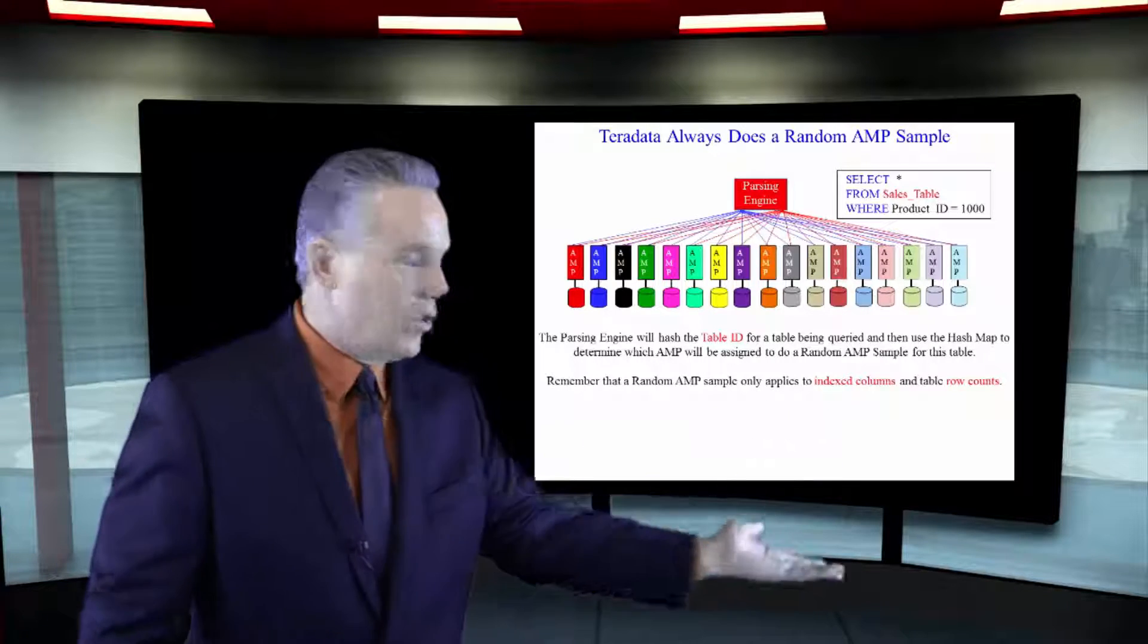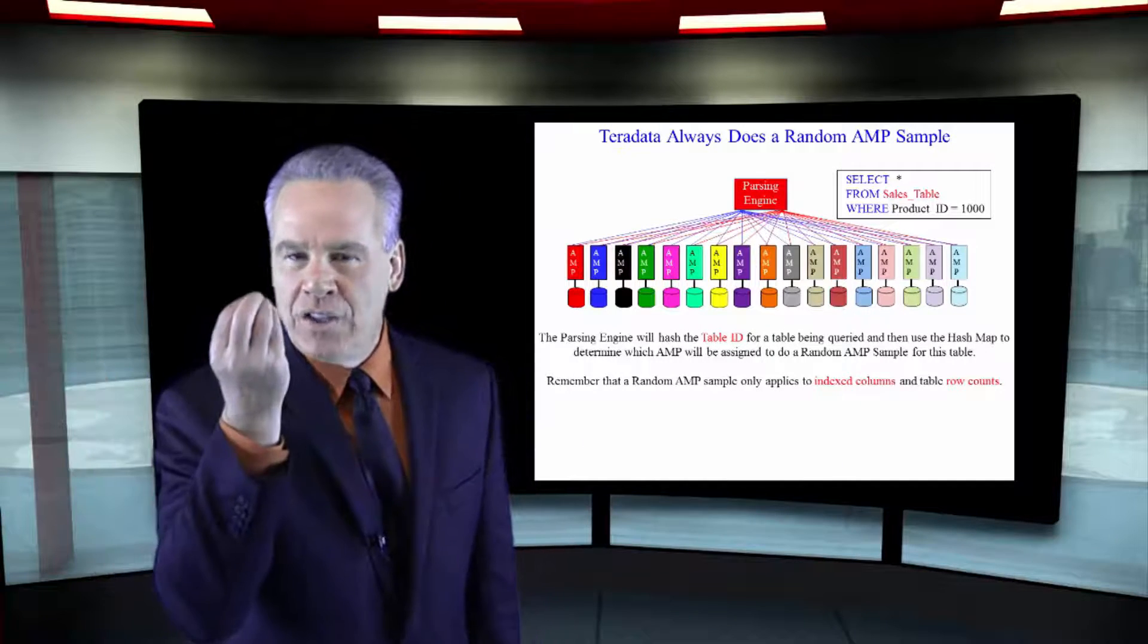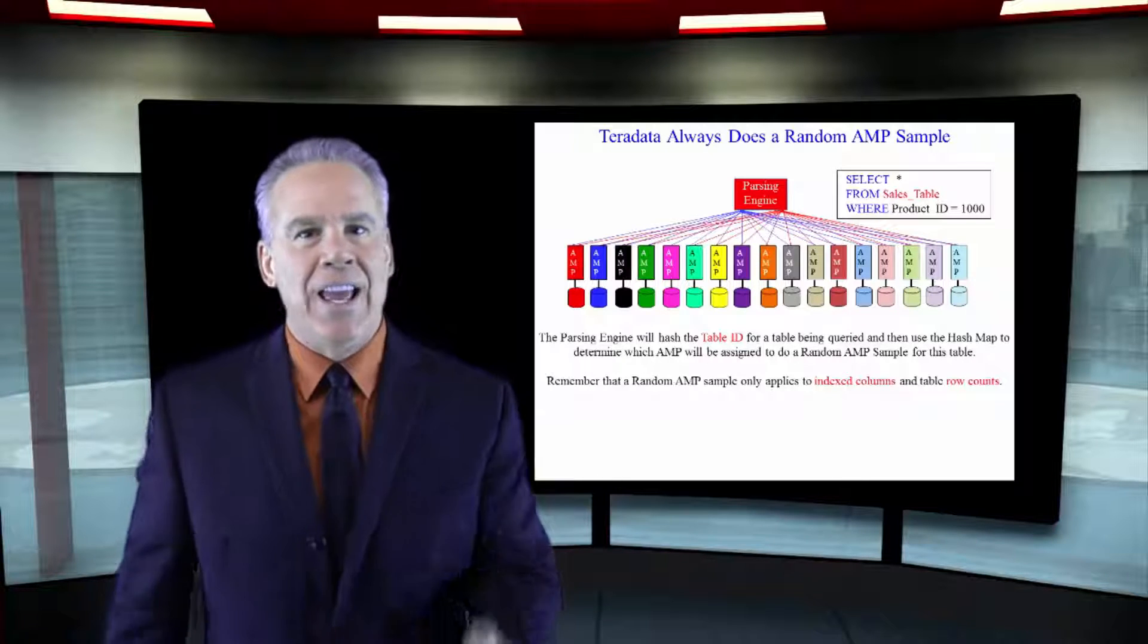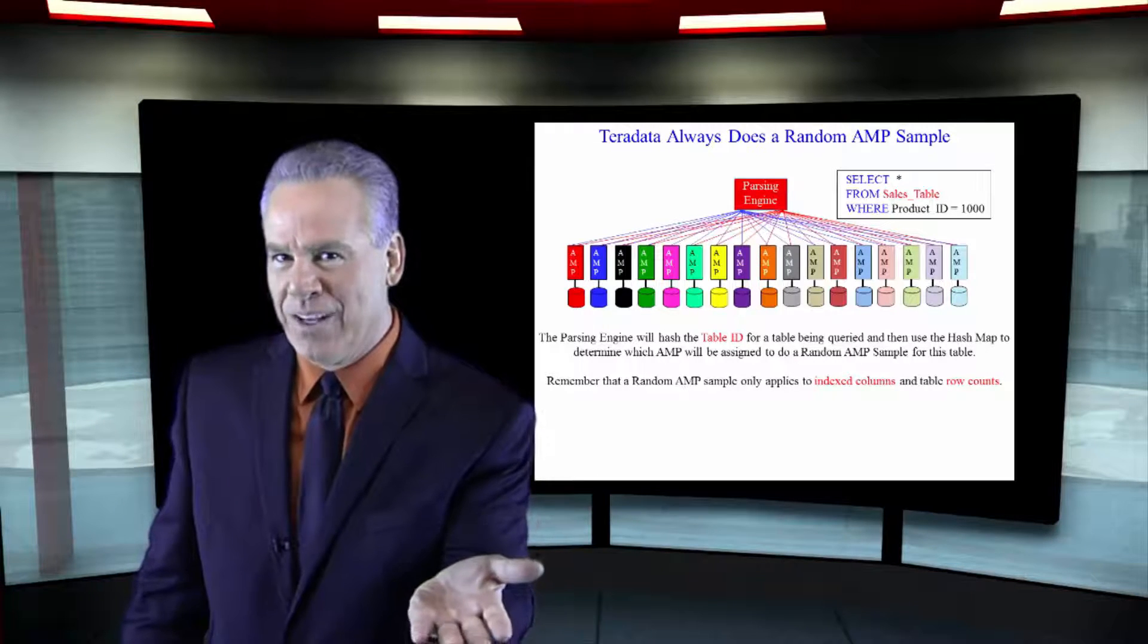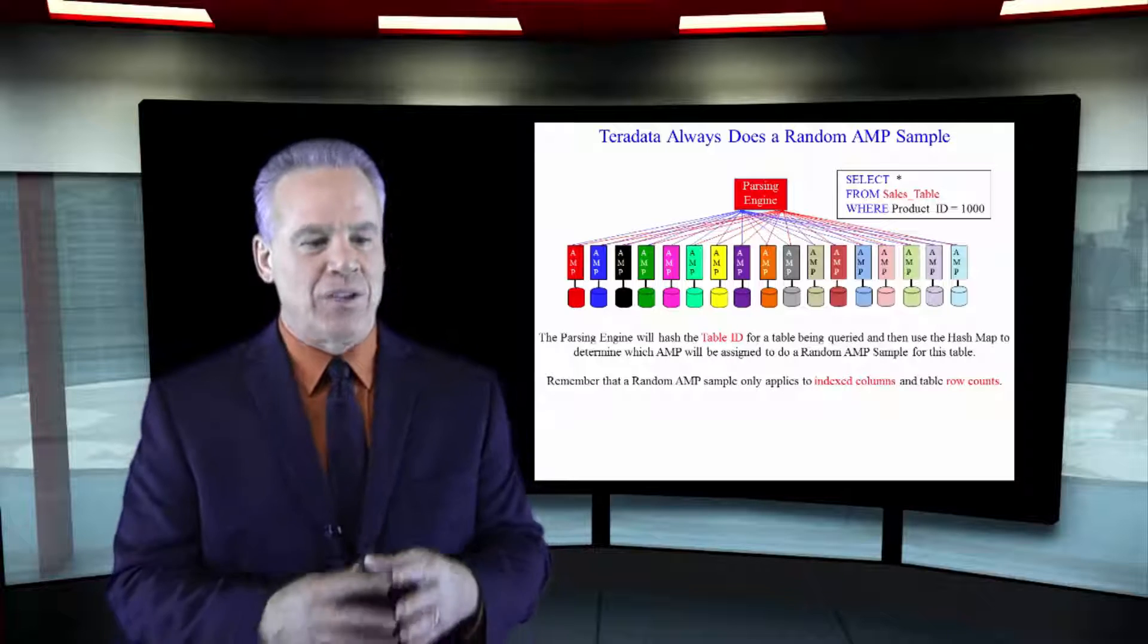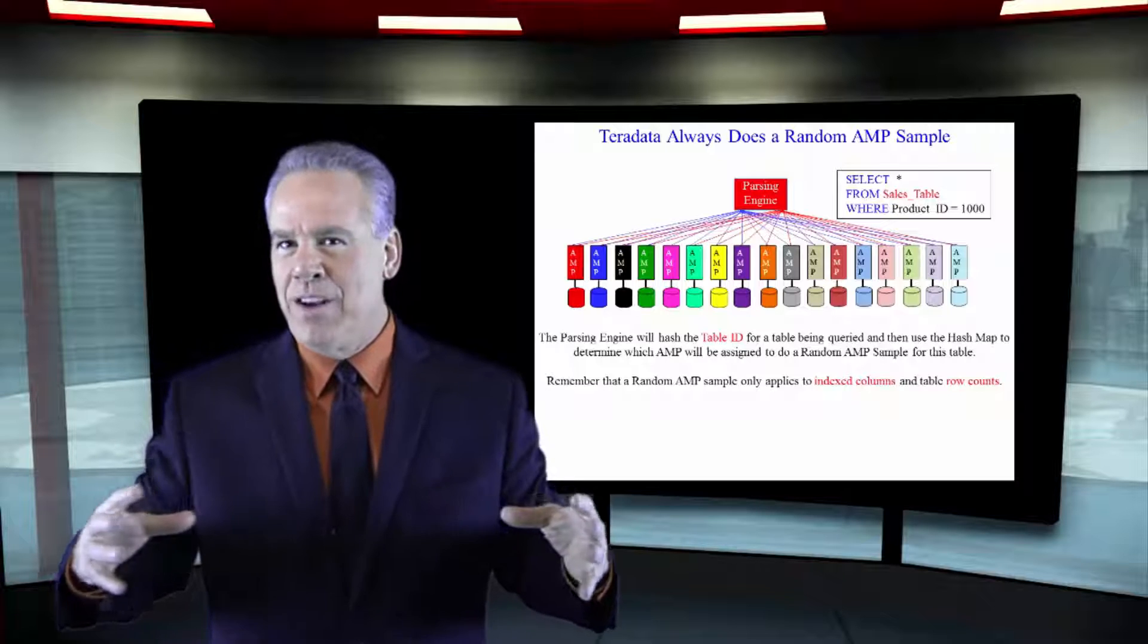It goes out and says, here's how many I have. It only does indexed columns and a table row count. And then the parsing engine can multiply that by the number of AMPs and say, I think this is the statistics that I can go with.